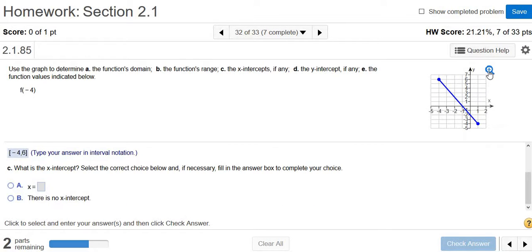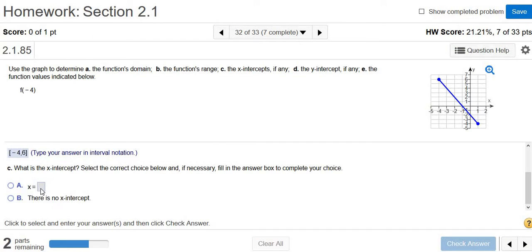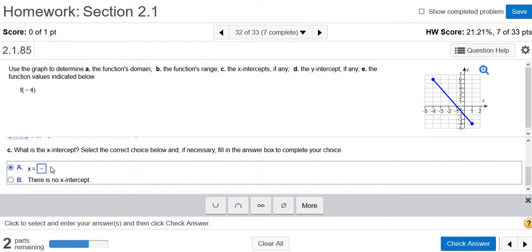The x-intercept is where the graph intercepts the x-axis, where it touches or crosses. Looks like it's right there, x equals negative 1. That's the x-axis, the horizontal axis, and the graph is crossing it at negative 1. So that should be our x-intercept, negative 1.